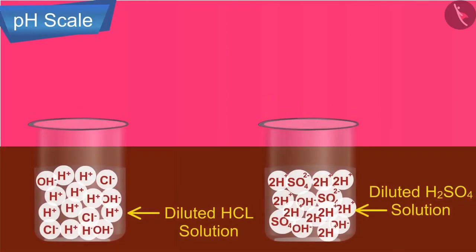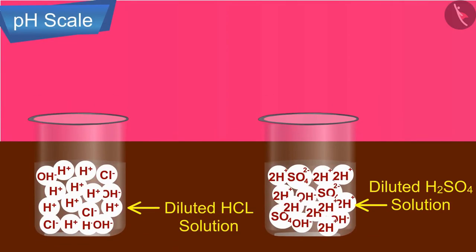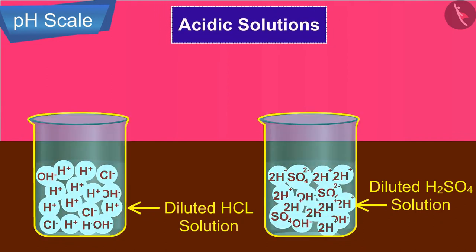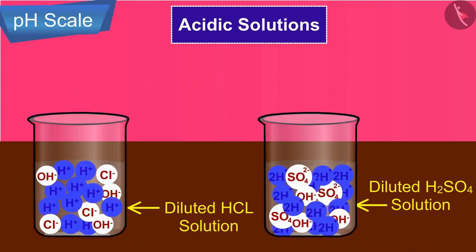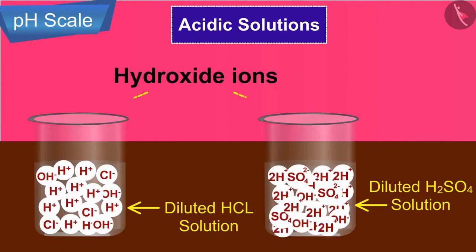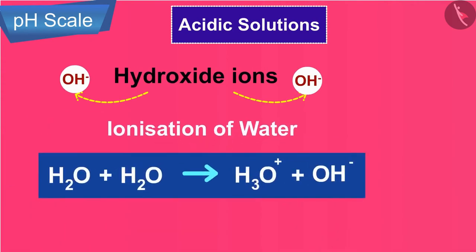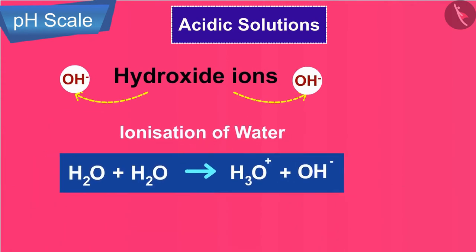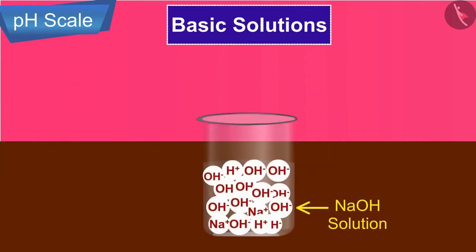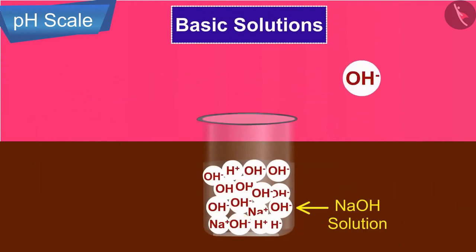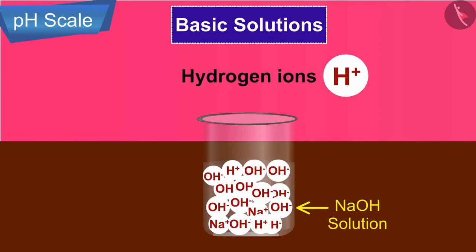Acidic solutions have excess hydrogen ions. Even acidic solutions contain hydroxide ions, which come from the ionization of water, but their concentration is too low. Similarly, basic solutions have excess hydroxide ions, but they also contain hydrogen ions at very low concentration.